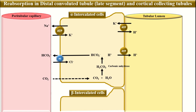Another important transporter on the basal side of the alpha intercalated cells is the potassium-chloride co-transporter. The chloride ions and potassium ions that accumulate inside the alpha intercalated cells are reabsorbed back into the peritubular capillaries with the help of this potassium-chloride co-transporter. In this way, chloride and potassium are reabsorbed into the peritubular capillaries.